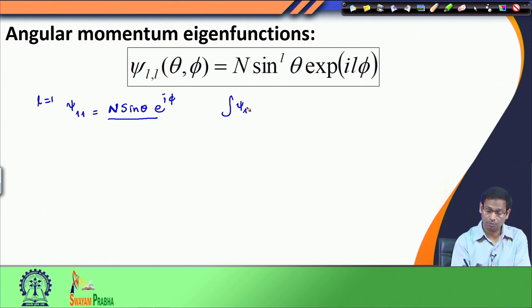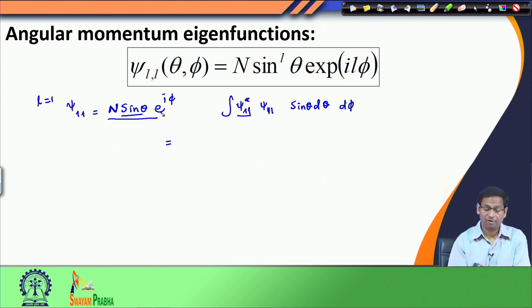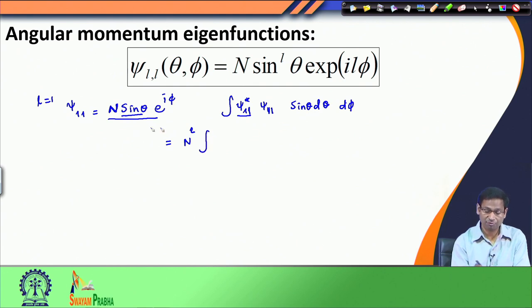I will compute the integral of psi_11^star times psi_11 with the volume element sin(theta)d(theta)d(phi). When I use psi_11^star, I note that sin(theta) is a real function so its complex conjugate is itself, but e^(i*phi) is complex so I have to be careful when evaluating its complex conjugate. I am left with N^2. I will first write down the theta terms.